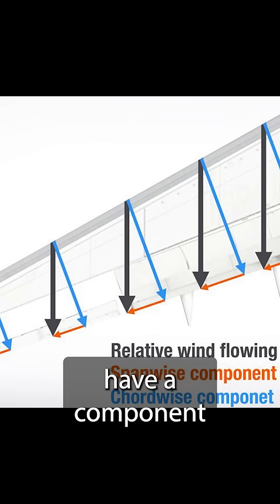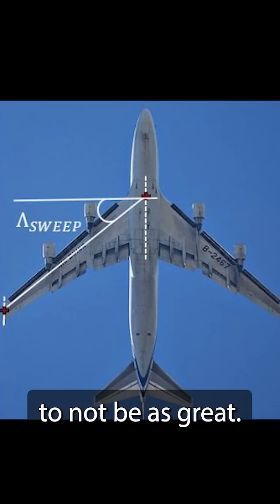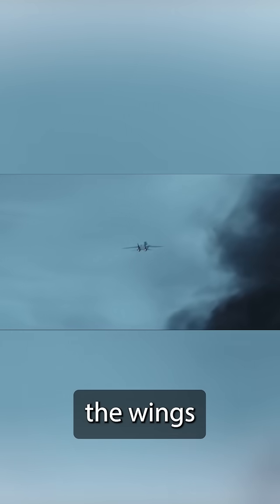Swept wings have a component of their air flowing along the span of the aircraft, causing the speed over the wing to not be as great. This reduces the amount of lift being generated. By taking the sweep out, Maverick was forcing as much air possible over the chord, increasing the lift the wings could generate.